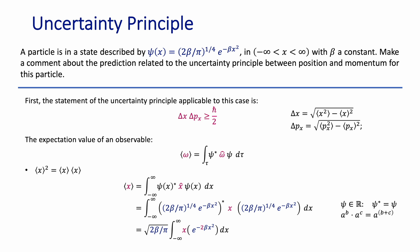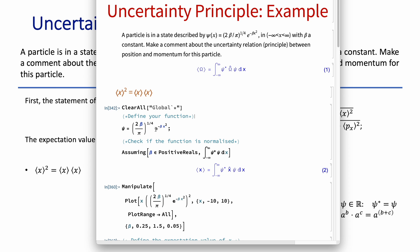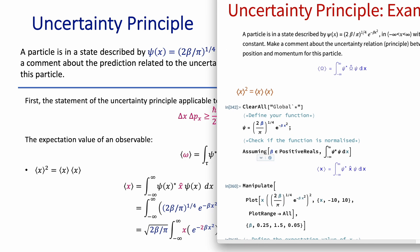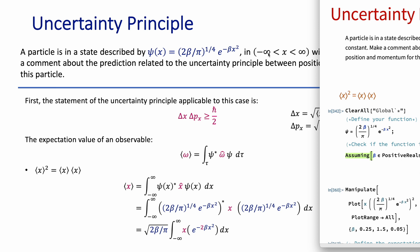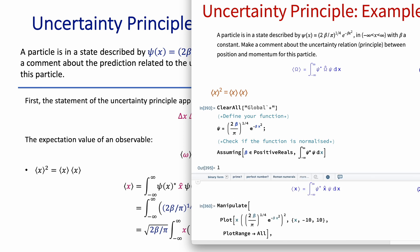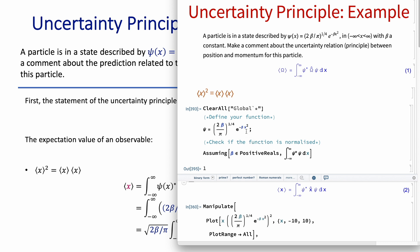Once the problem is set up, we can use Mathematica to handle the math. We define the wave function exactly as given. The first thing to always check is that the function is normalized — there is a constant in front of the exponential, but that is not necessarily the normalization constant; it could just be a constant. We assume it is a positive real number, integrate the complex conjugate times the wave function over all space from minus infinity to infinity, and confirm the integral equals one. The function is normalized.